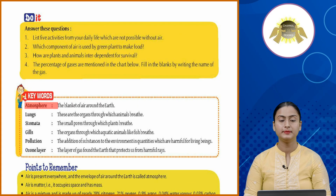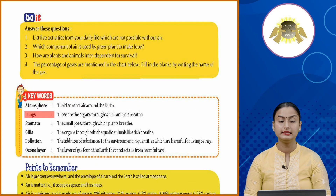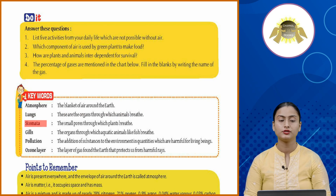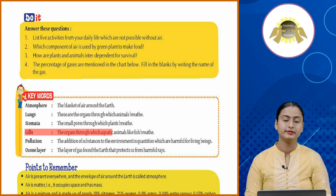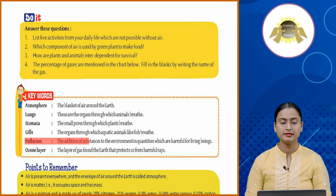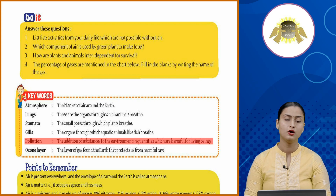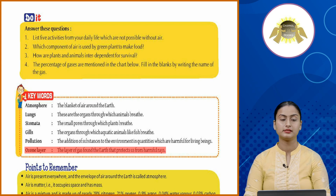Key words: Atmosphere — the blanket of air around the earth. Lungs — the organs through which animals breathe. Stomata — the small pores through which plants breathe. Gills — the organs through which aquatic animals like fish breathe. Pollution — the addition of substances to the environment in quantities harmful for living beings. Ozone layer — the layer of gas around the earth that protects us from harmful rays.